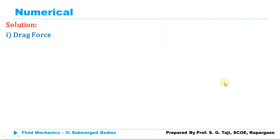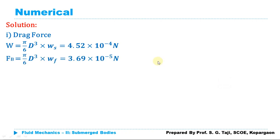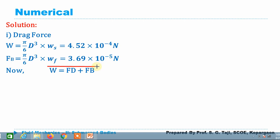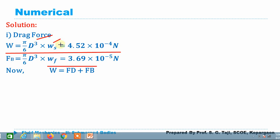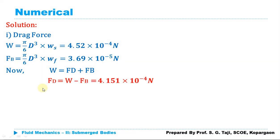For the drag force, we use the equilibrium condition: W = FD + FB. Weight W = (π/6)D³ × Ws, and buoyancy force FB = (π/6)D³ × Wf. Substituting all values for weight and buoyancy force, and solving for FD, the drag force comes out as 4.151 × 10⁻⁴ N.